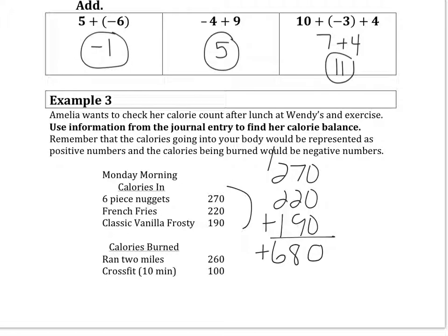680 are going into her body, and then leaving would be the calories that she has burned. Those are going to be negatives. Since they're both negative, I'm going to add and keep the negative sign. So it's going to be negative 360 calories.